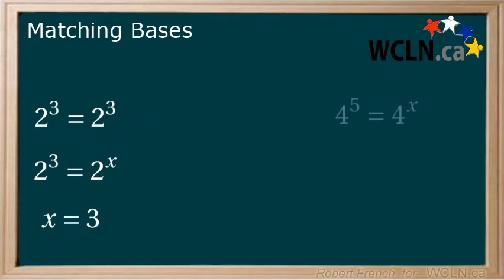And here. 4 to the power of 5 equals 4 to the power of x. By inspection we know that x equals 5 for this to be true.